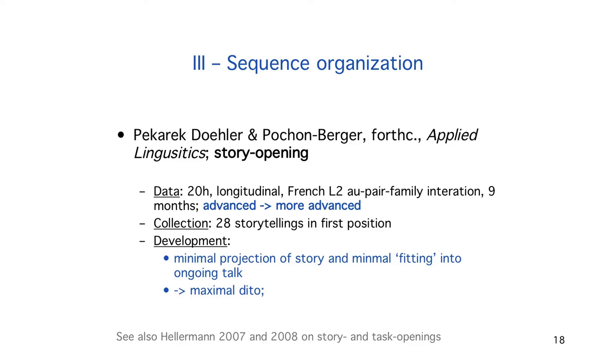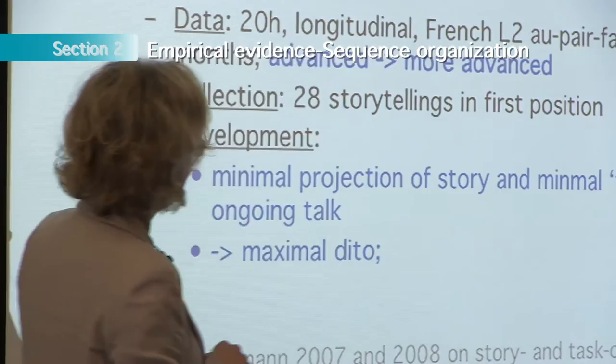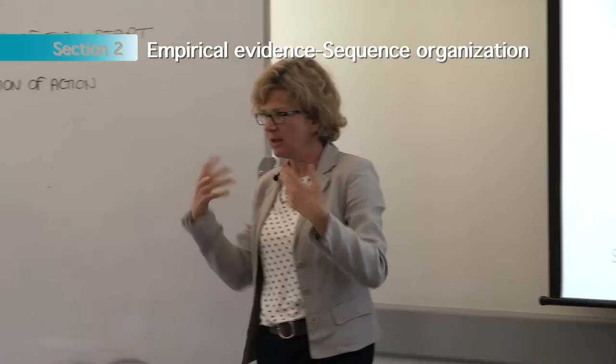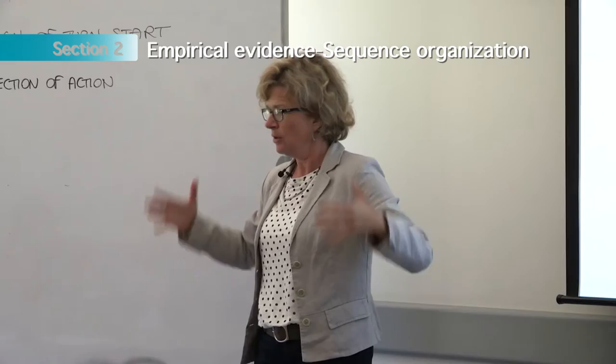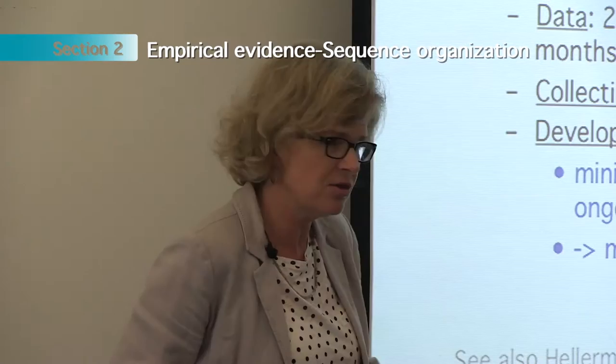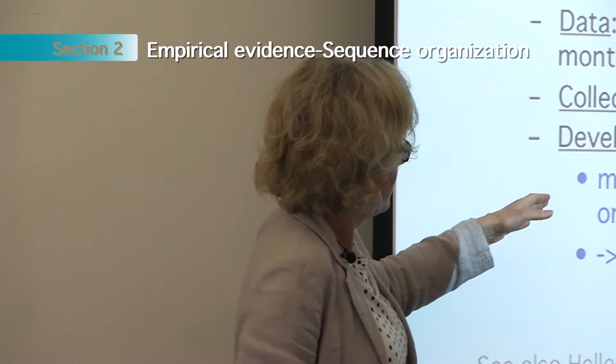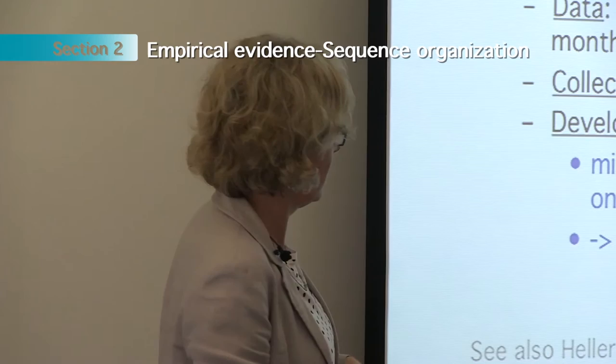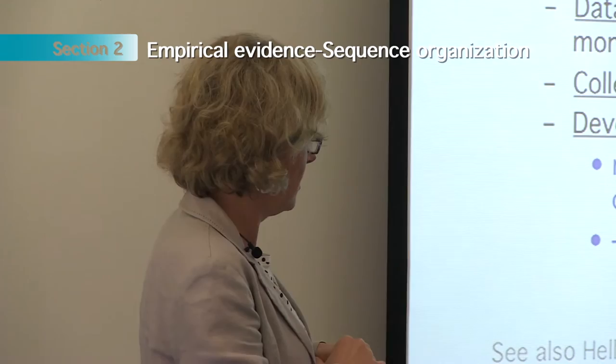The data consists of 20 hours, longitudinal, across nine months staying with the au pair family. We see the girl — called Julie — move from advanced to more advanced. We have a collection of 28 storytellings, so this is collection-based. We don't look at one interaction and then another; we look at regularities. In terms of development, we see that in the start she only minimally indicates that what she's going to do is tell a story — minimal projection of the story and minimal fitting into ongoing talk.